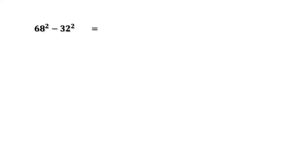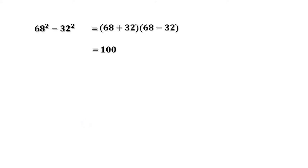68² - 32². We know a² - b² = (a + b)(a - b). Therefore 68² - 32² can be written as (68 + 32)(68 - 32). 68 + 32 is 100 and 68 - 32 is 36, so the answer is 3600.